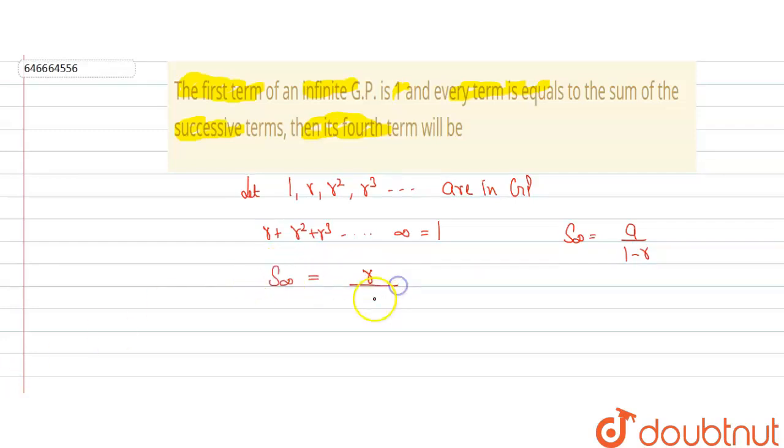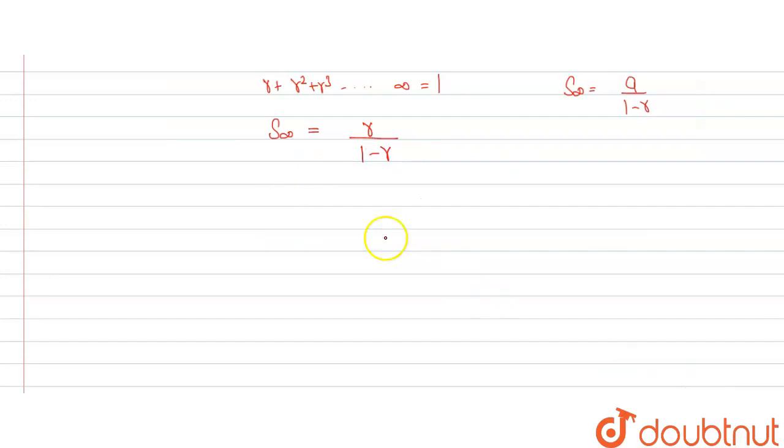So what we will do is, as first term is r and common ratio is also r, we get r/(1-r), and sum is given to us equal to 1, as we are given that every term is equal to sum of successive terms.